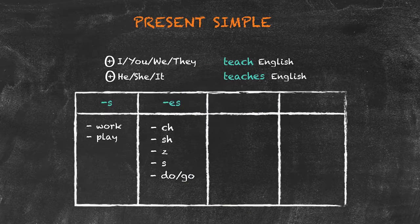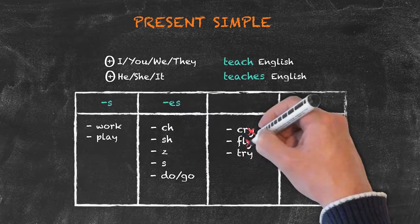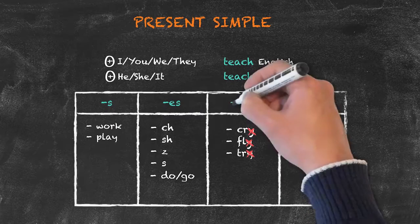Then for verbs that end in a consonant and y, we drop the y and add ies.